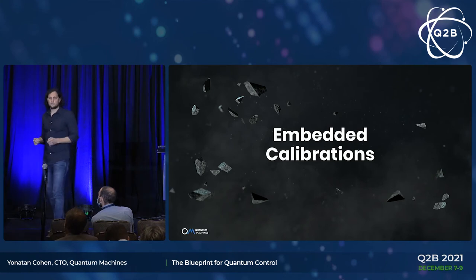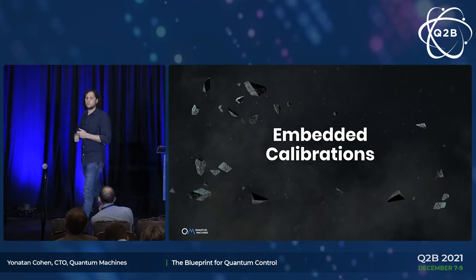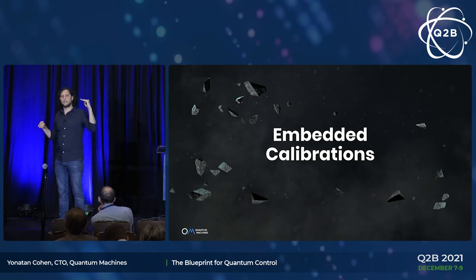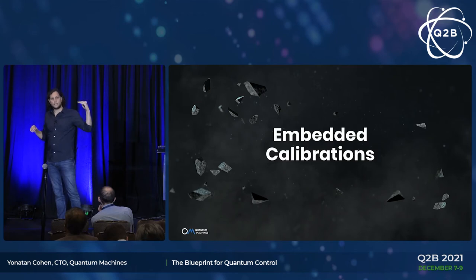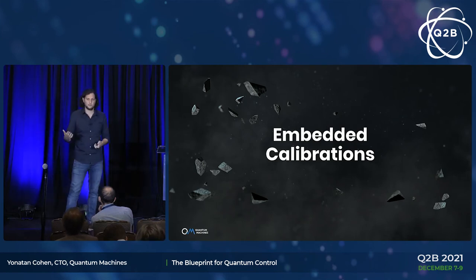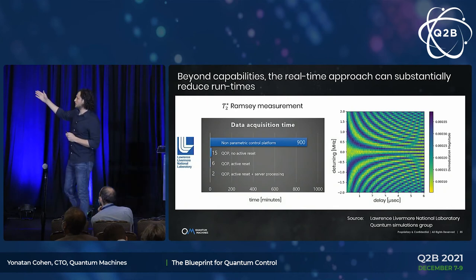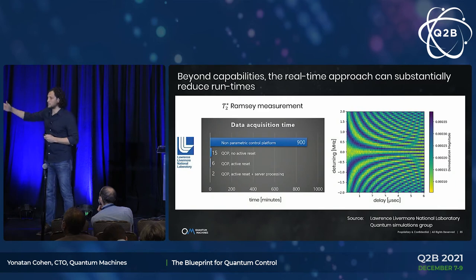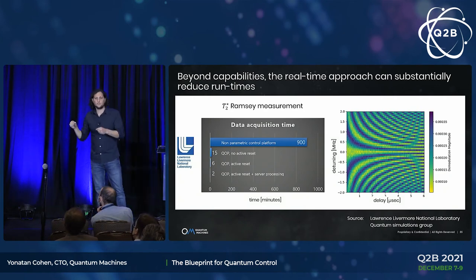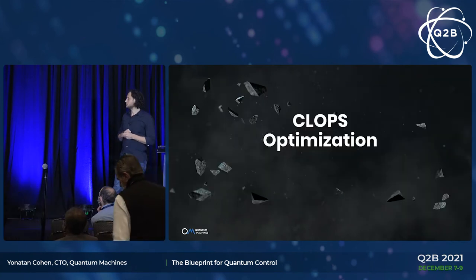Next example: embedded calibrations. If we can run calibrations fast enough and use active feedback to correct parameters to newly calibrated values fast enough, we can keep the system calibrated continuously without downtime. An example from Lawrence Livermore National Lab: they used to run a Ramsey calibration — a qubit frequency calibration — in about 900 minutes with their previous platform. Now they run this calibration in about two minutes, and by sampling the graph and using fast feedback, can very quickly adapt to the right qubit parameters.